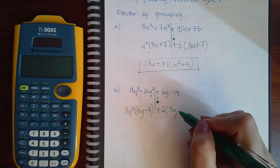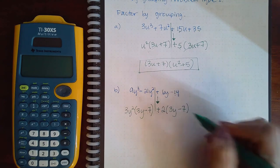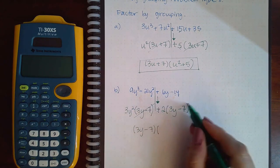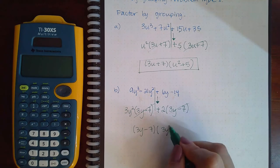Negative 14 divided by positive 2 is negative 7. Now the two sides have this 3y minus 7 in common, so when I factor that out I get the 3y² in the front here plus the 2 that is in the front there.